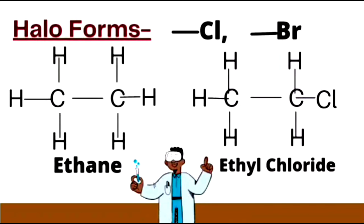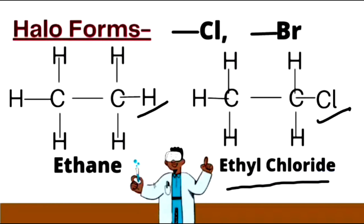The next group is the haloform group. In this group we have halogen elements like chloro and bromo. Here is ethane as an example. The hydrogen atom in ethane is replaced by chloro or bromo, and the new compound attached to ethane is called ethyl chloride. These functional groups are attached to carbon and hydrocarbon chains.